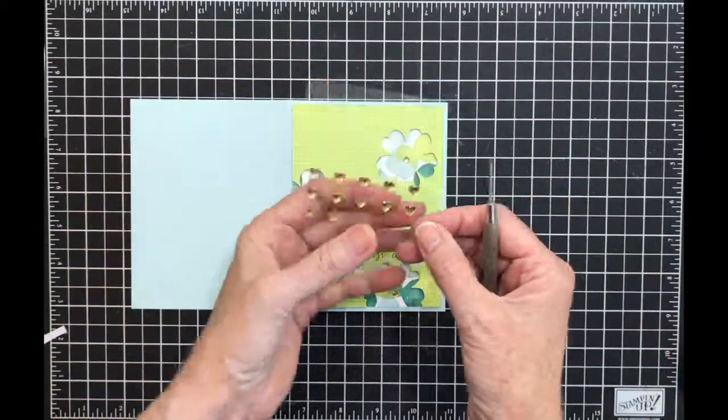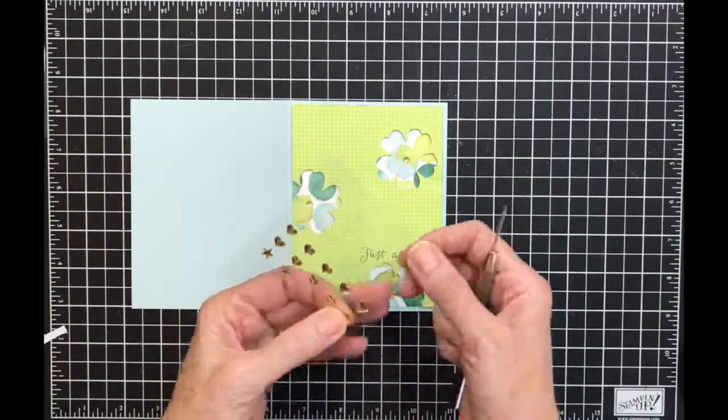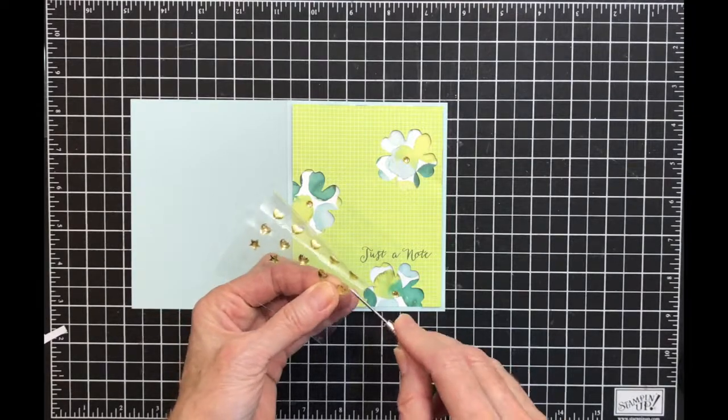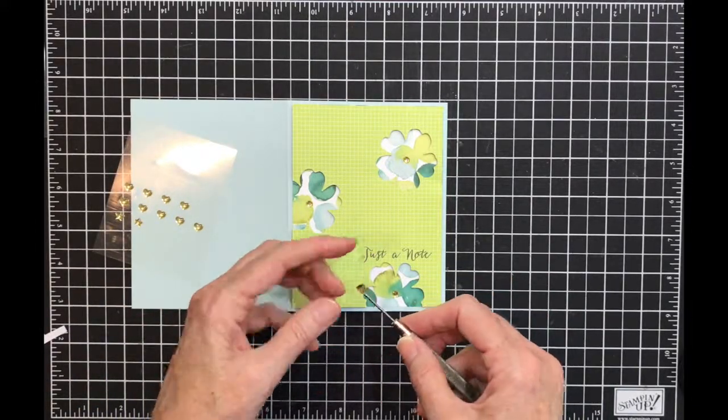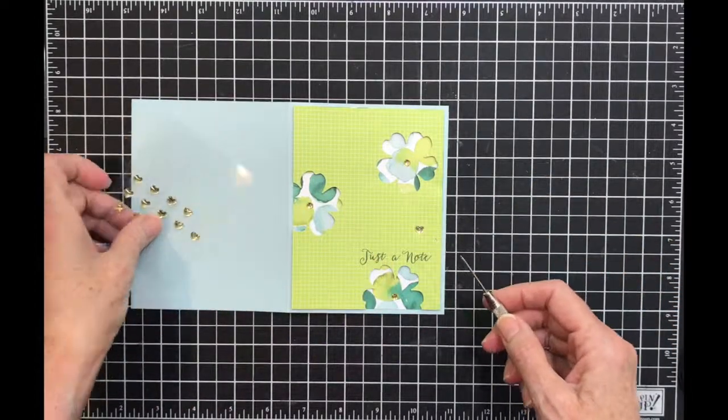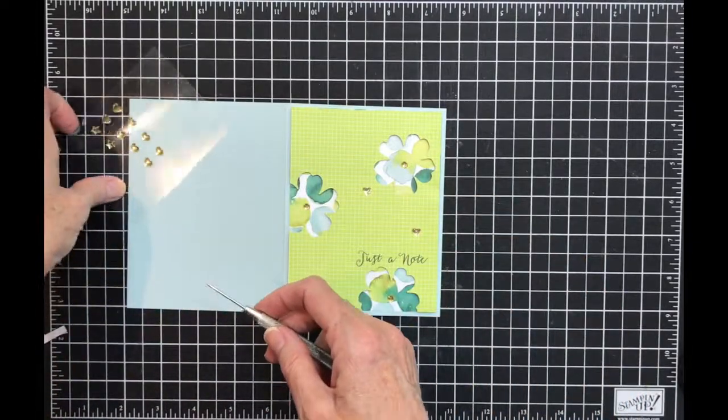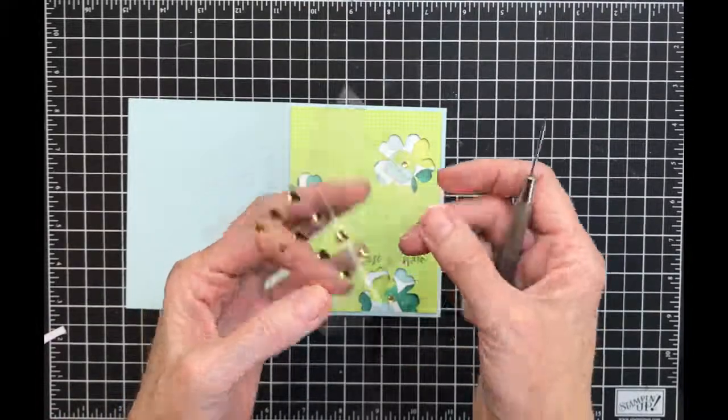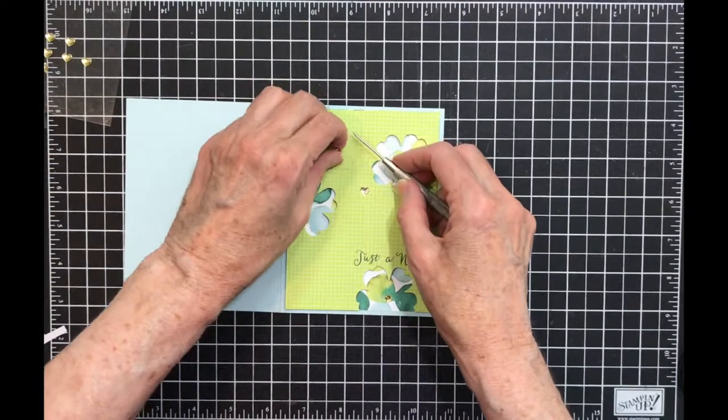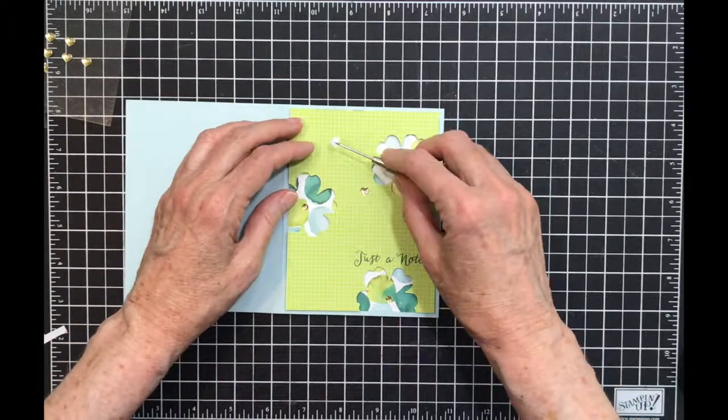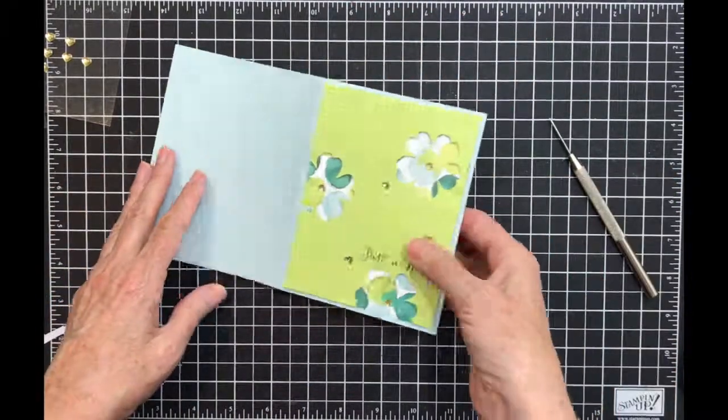And now I'm going to use some hearts sprinkled on there. I think I am anyway. I'll go the other way. There's one, there's two, and I need another one. Don't stick, that's not where I want you. There we go.